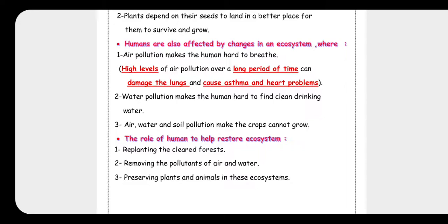The role of humans in helping to restore the ecosystem: first, replanting cleared forests. Second, removing pollutants from air and water by finding and fixing the sources of pollution. Third, preserving plants and animals in the ecosystem by trying to protect them.